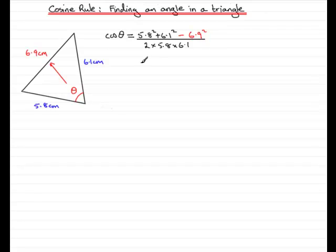What we need to do now is just work this out on the calculator. If you do that, you'll get 0.3284 and so on. Now, to get theta, we need to take the inverse cosine to both sides. That gives us theta equals the inverse cosine of 0.3284 and so on. If you want your angle in degrees, make sure your calculator's in degrees mode.